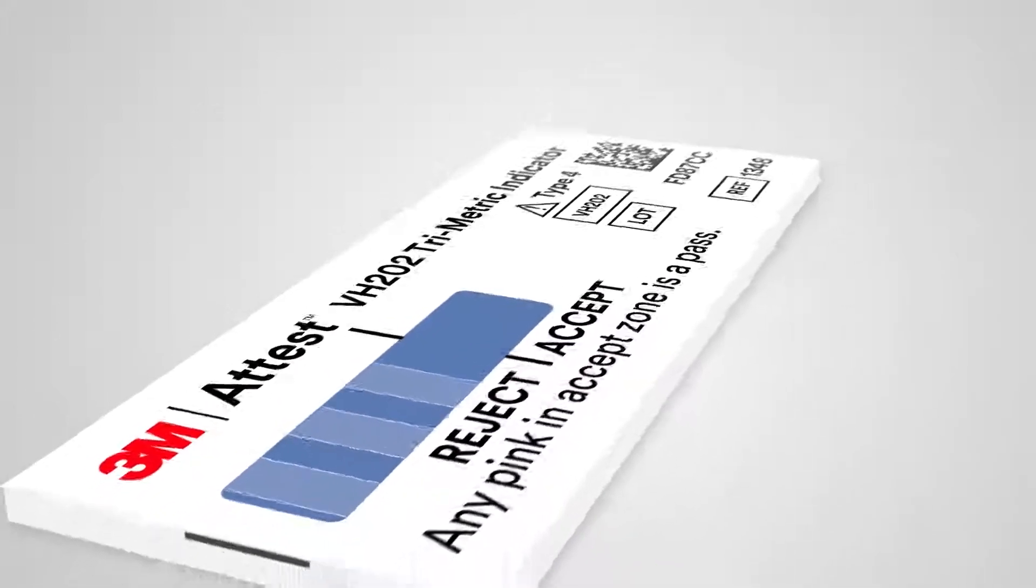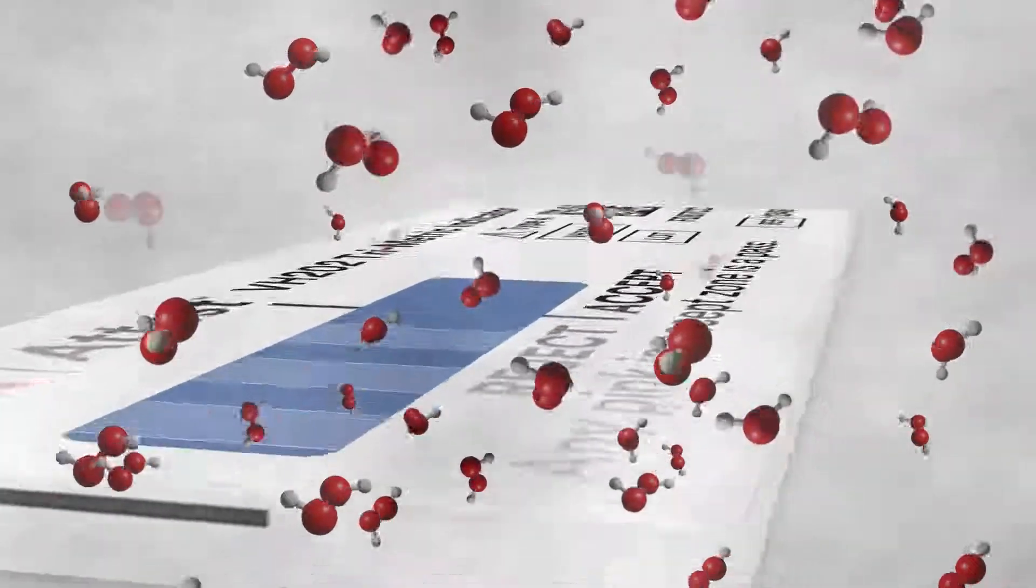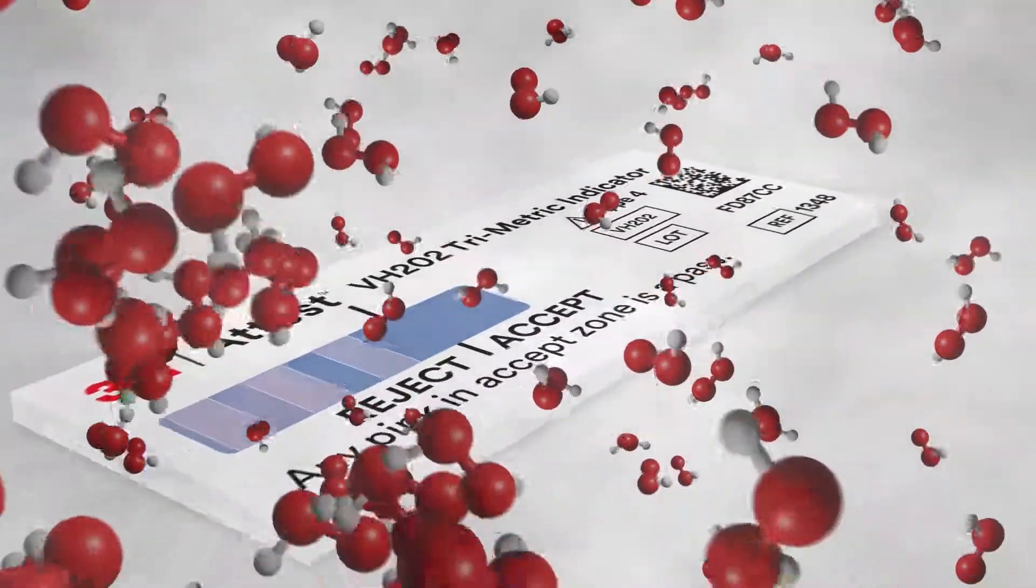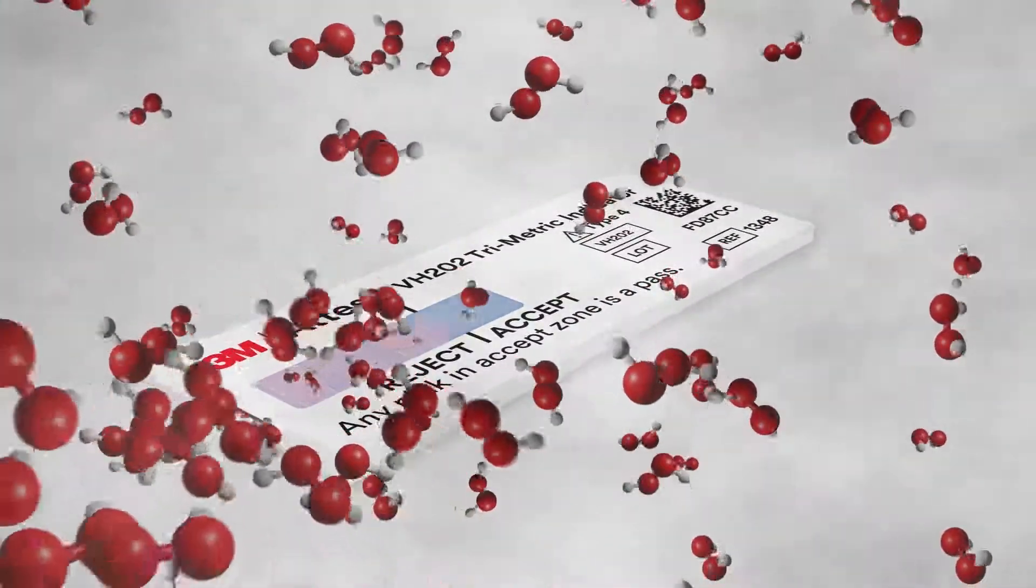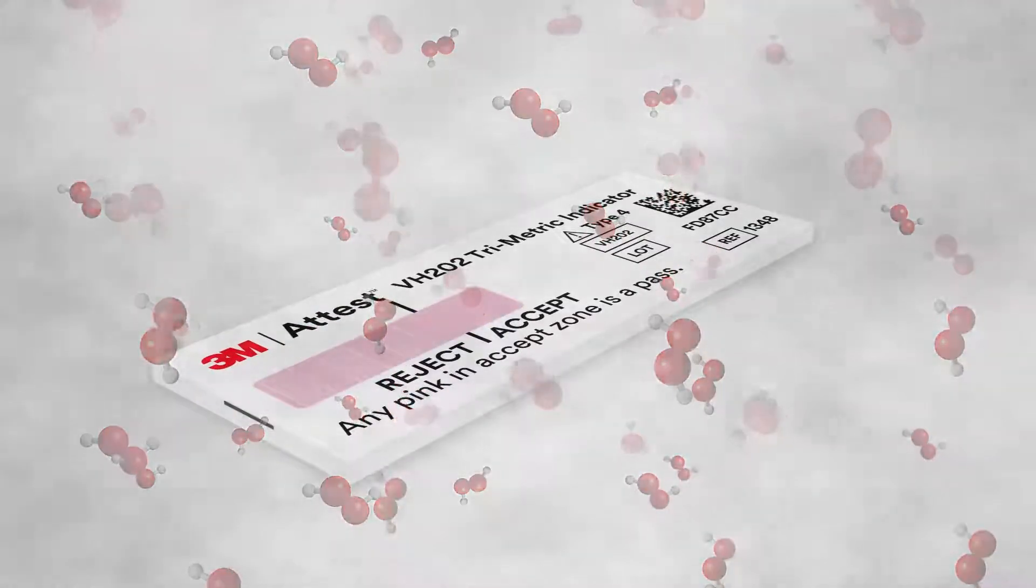The unique state-of-the-art construction of the 3M Attest Trimetric CI features a designed pathway through which the VH202 sterilant must penetrate and travel to change the reactive chemistry from blue toward pink, providing a moving front technology in a hydrogen peroxide chemical indicator.